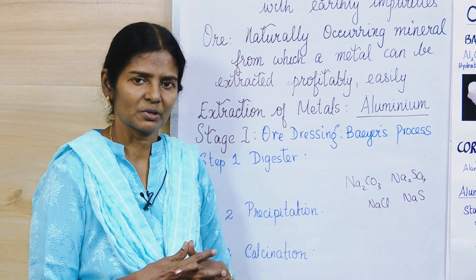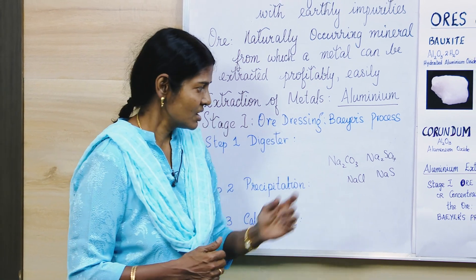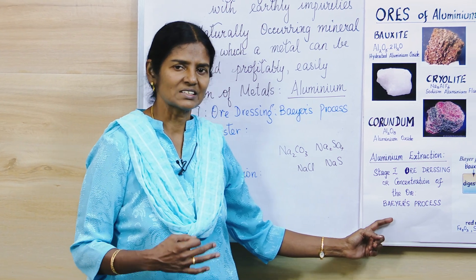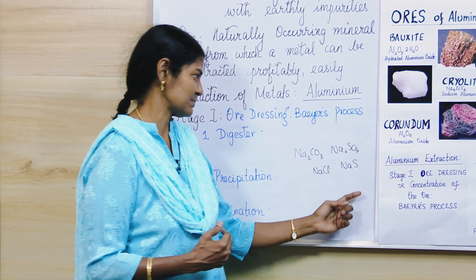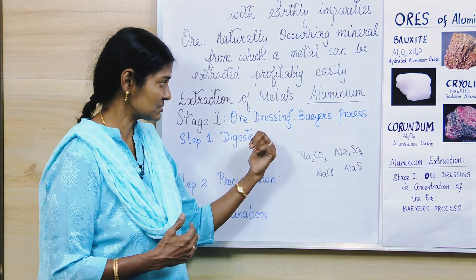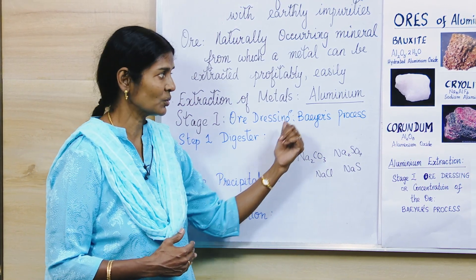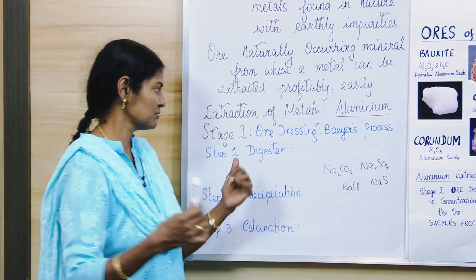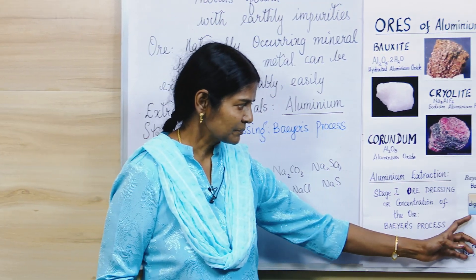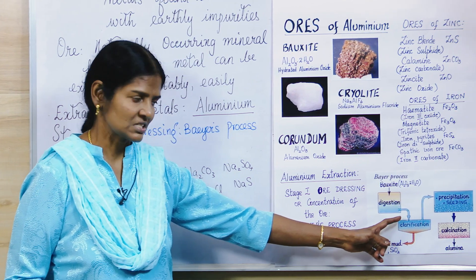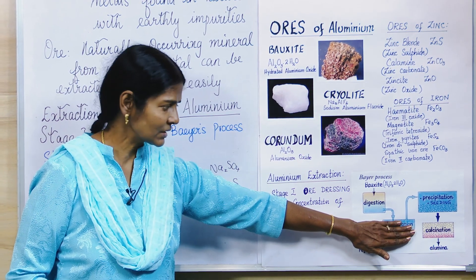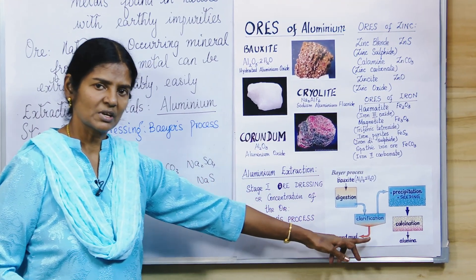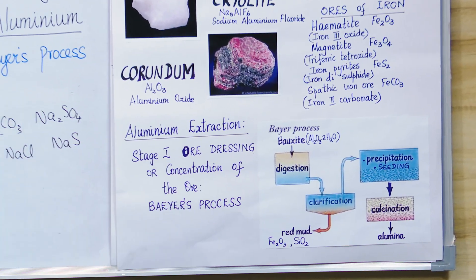In the case of aluminium, which is the only one we have in the syllabus this year, concentration of the ore is also called Bayer's process, and it is made of three steps. The ore selected is the most abundant ore of aluminium — bauxite. The three basic steps in Bayer's process are digestion, precipitation, and calcination.